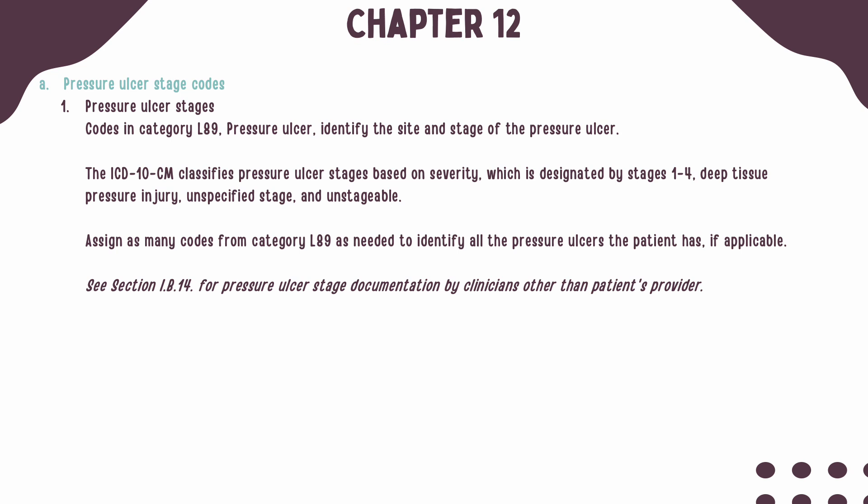Chapter 12 starts with coding for pressure ulcer stages. Codes in Category L89 identify the site and stage of the pressure ulcer. Pressure ulcers are based on severity and are designated by Stages 1 through 4, Deep Tissue Pressure Injury, Unspecified Stage, and Unstageable. It is important to assign as many codes from Category L89 as needed to identify all pressure ulcers present on the patient.